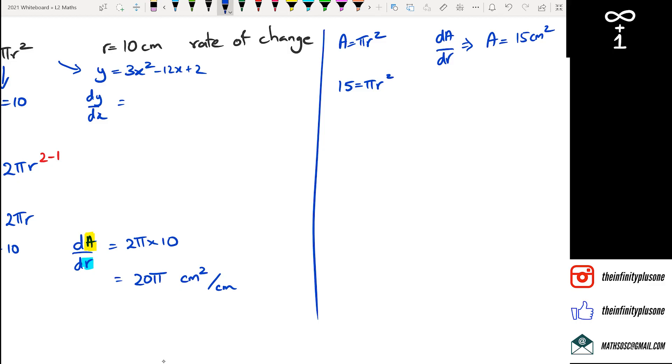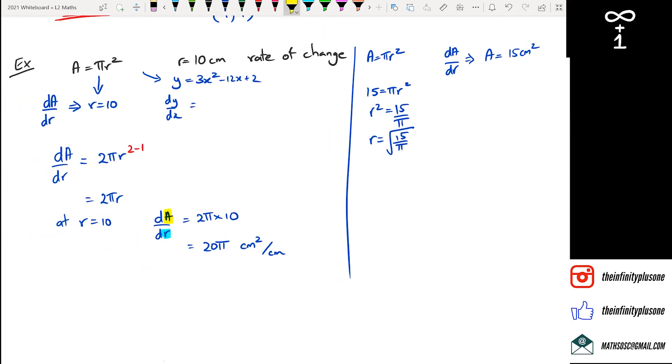So you have to go and put 15 equals πr squared and then work out what r is. So in this case I'm going to get r squared is equal to 15 over π, and then r is equal to square root of 15 over π. Then what I do is once I get what this r value is, r equals to that, let me just write that a little bit clearer.